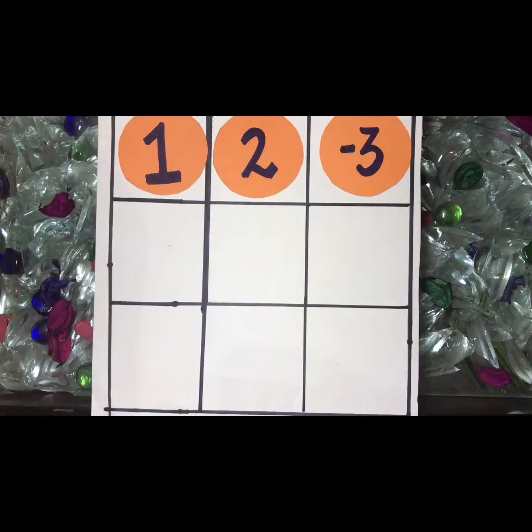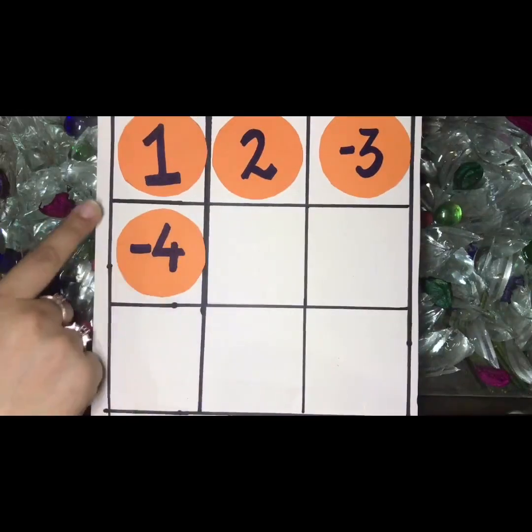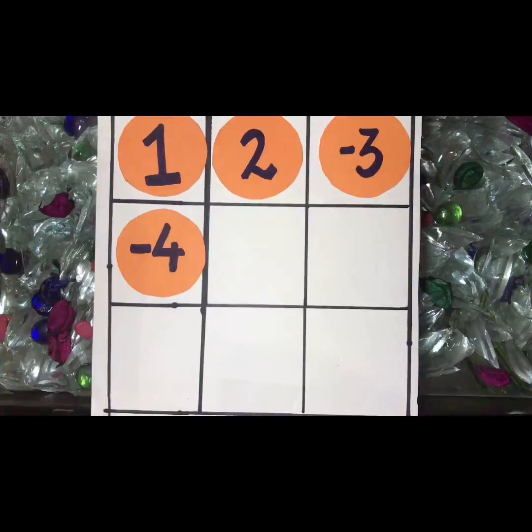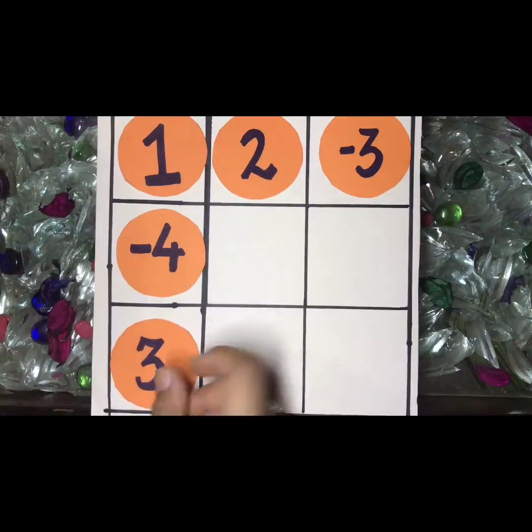Now I'll take minus 4 and 1. The answer becomes minus 3. Similarly, to get the answer I need 3. So the answer of this row becomes 0.